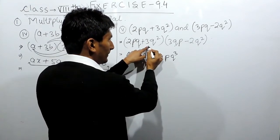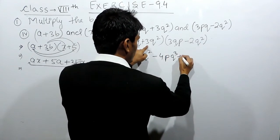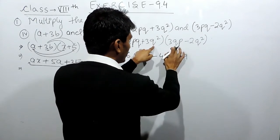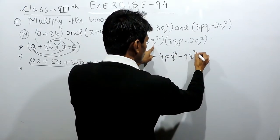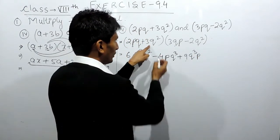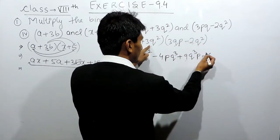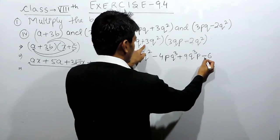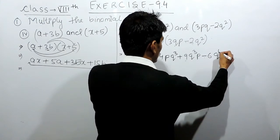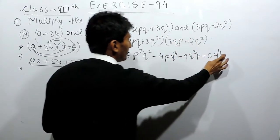After that you have to multiply the second term with both terms of the second binomial. So 3 multiplied by 3 will give 9, and q multiplied by q² gives q³, with p remaining as it is, giving 9pq³. Then 3 multiplied by 2 is minus 6 because it is negative, and q multiplied by q² gives q⁴ since base is same and powers add: 2 plus 2 equals 4, giving minus 6q⁴.